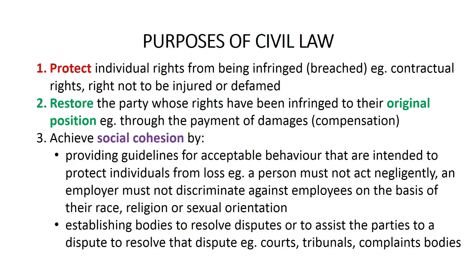And the third purpose of civil law is to achieve social cohesion. Civil law does this in two ways. First, it provides guidelines for acceptable behaviour, where these guidelines are intended to protect individuals from loss — for example, under civil law a person must not act negligently, and an employer must not discriminate against employees on the basis of their race, religion or sexual orientation. The second way civil law achieves social cohesion is by establishing bodies to resolve disputes, or to assist the parties to a dispute to resolve that dispute. These bodies include courts, tribunals and complaints bodies.